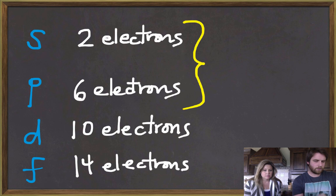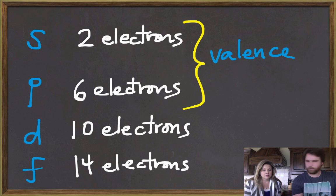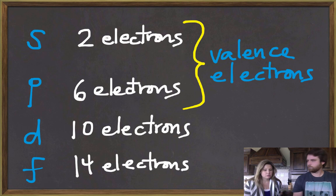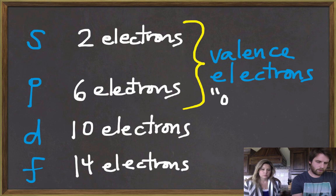So something special here about the s and the p orbital: these are the orbitals that make up what we call our valence electrons. Valence electrons are the electrons where the chemistry happens. They're shared or transferred in reactions, and they're the outermost, so they're the easiest to get to.